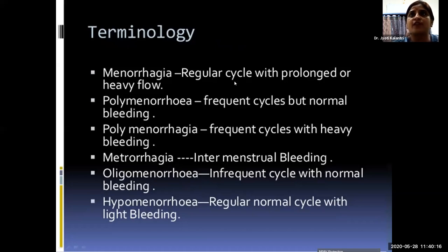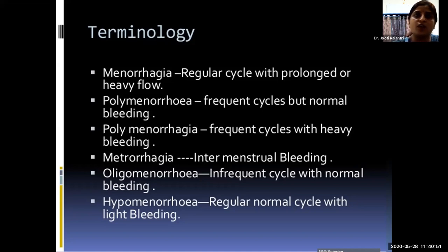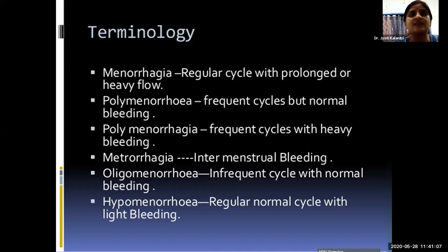Terminology related to abnormal uterine bleeding: menorrhagia is regular cycling with prolonged or heavy flow (more than 80 ml); polymenorrhea is frequent cycles with normal bleeding; polymenorrhagia is frequent cycles with excessive bleeding; metrorrhagia is intermenstrual bleeding between periods; oligomenorrhea is infrequent cycles with normal bleeding (cycle of 35–40 days); and hypomenorrhea is regular cycles with very scanty bleeding, sometimes lasting only one day.